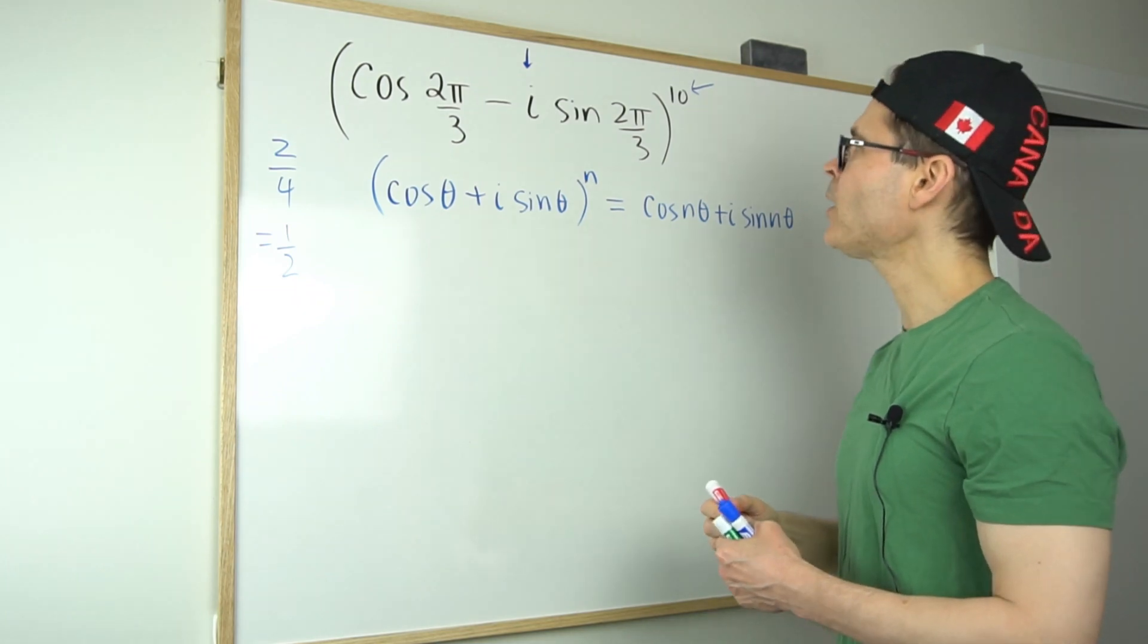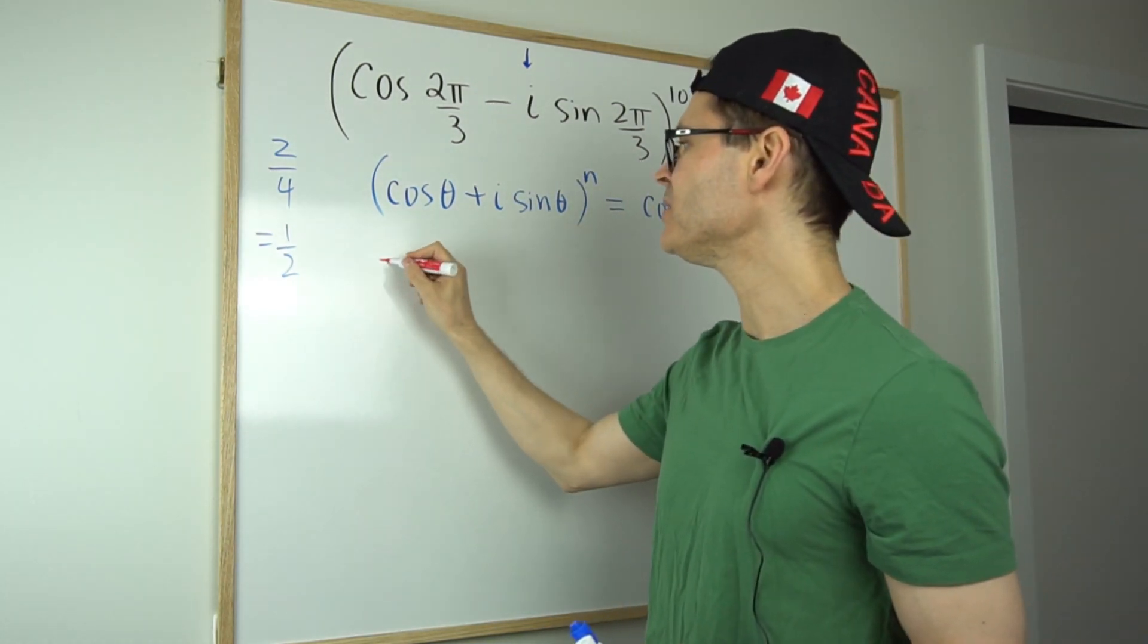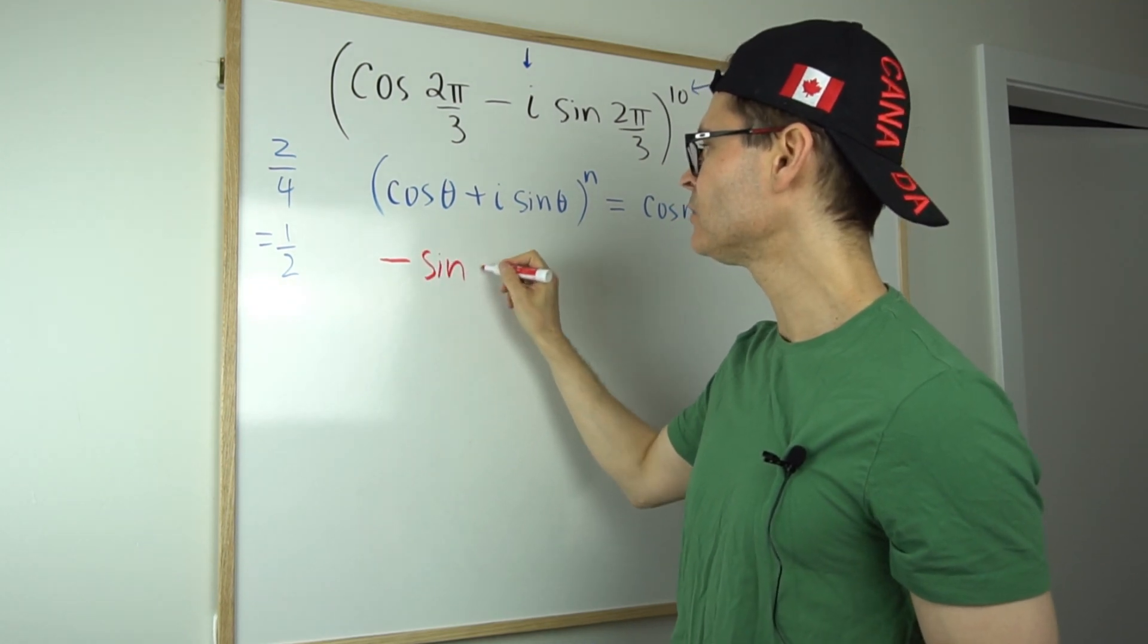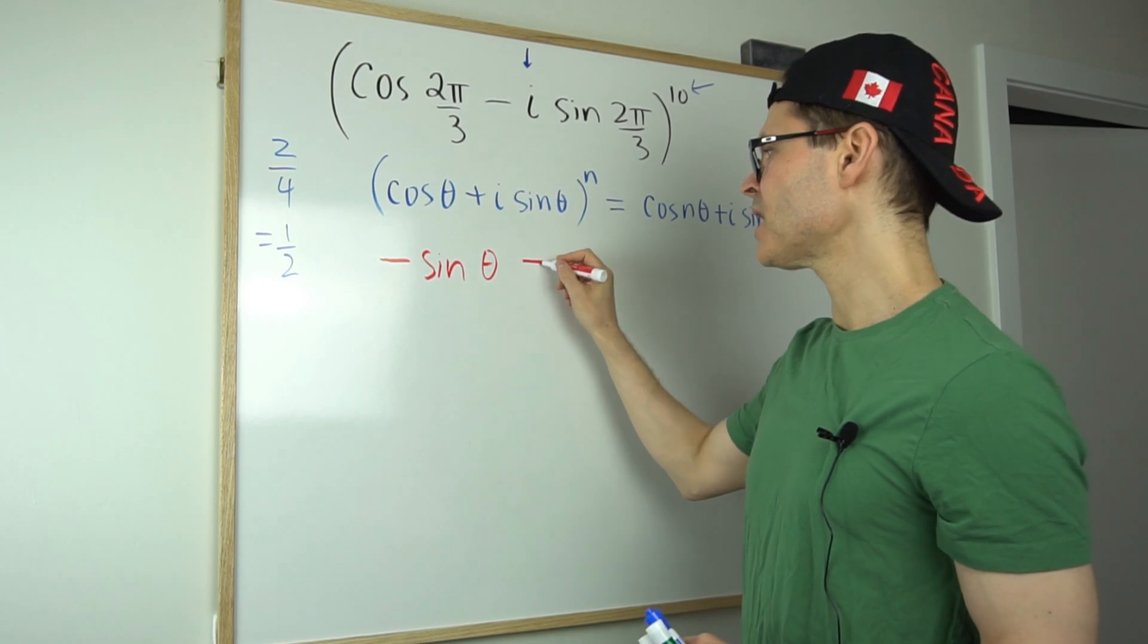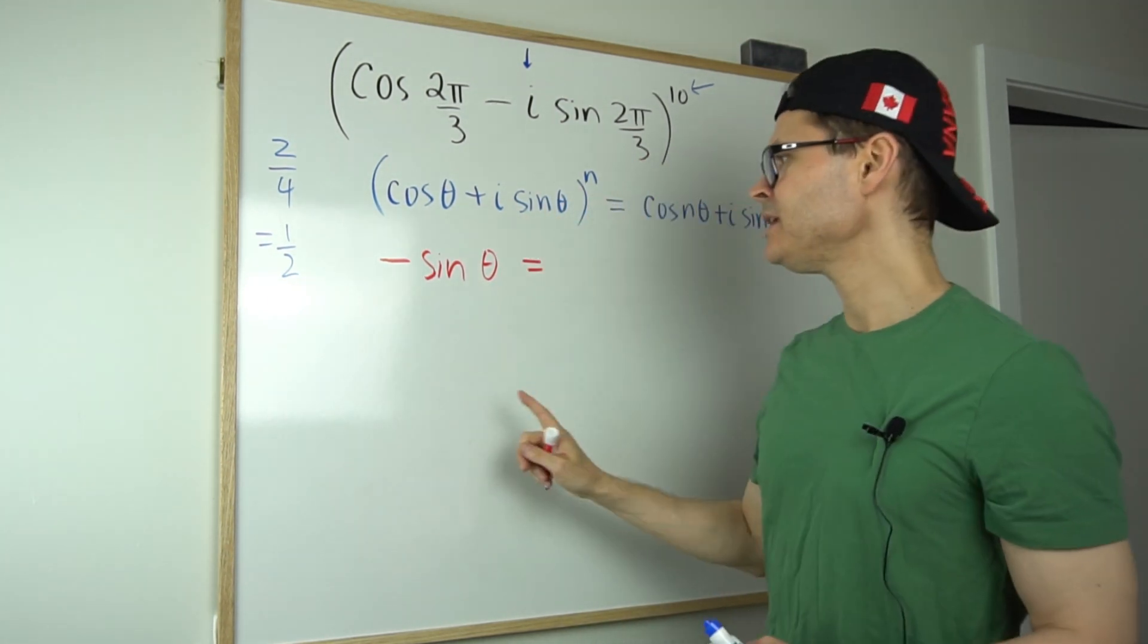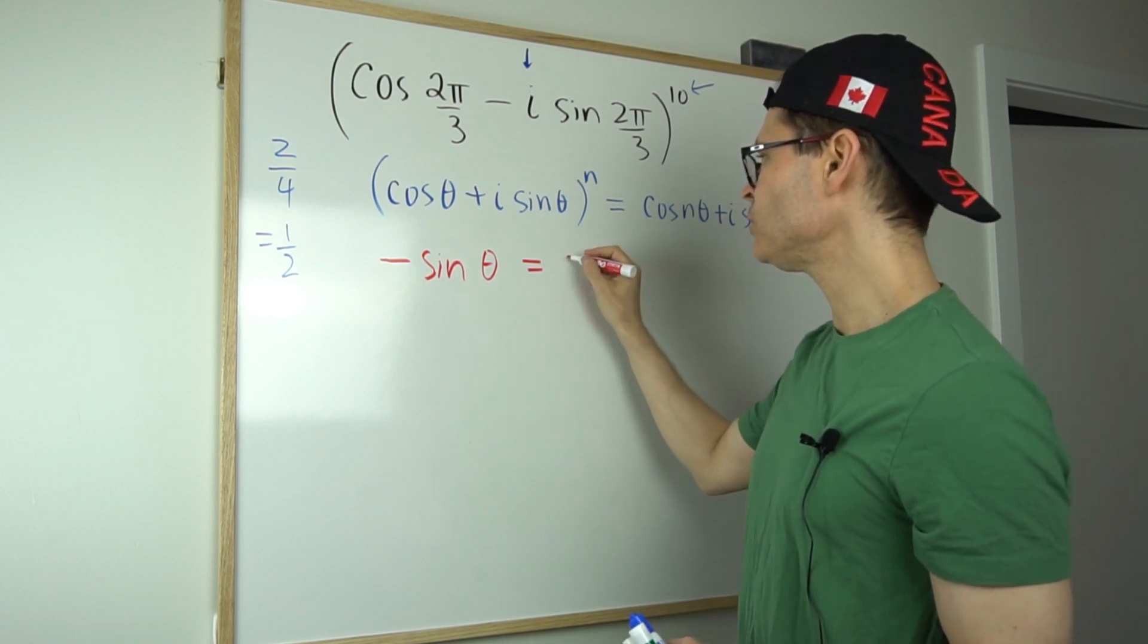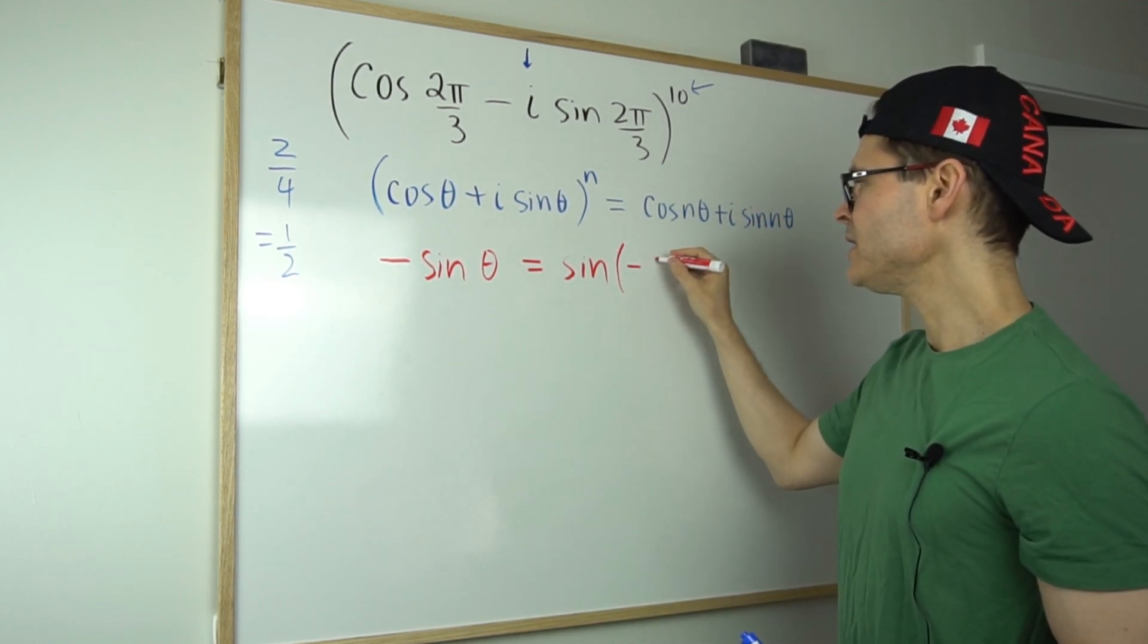So what I could do, though, is notice I've got a negative sine. So what do I know about negative sine of an angle? Well, I do know a little bit about the sine wave. If you just visualize it, it's an odd function, meaning that the negative sine is equal to the sine of the negative angle.